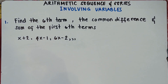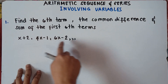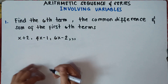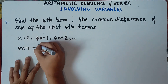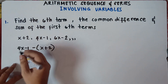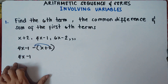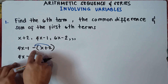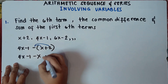The first thing we need to do is find the common difference. To find the common difference, we need to get the value of x. To get the value of x, simply subtract the second term by the first term, and the third term by the second term. So: 4x minus 1, minus (x plus 2). We put parentheses because this is a binomial.